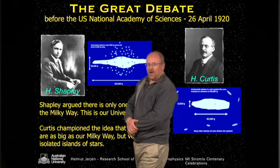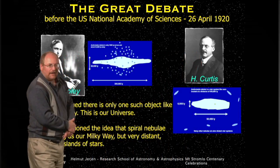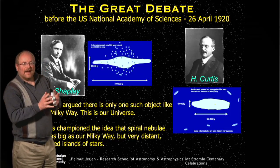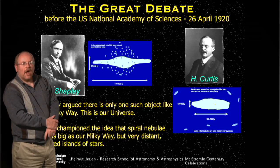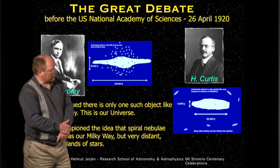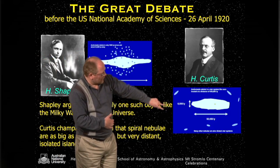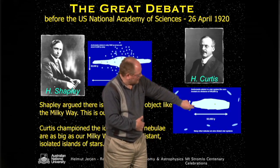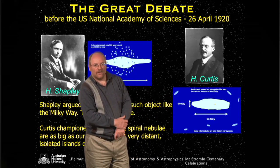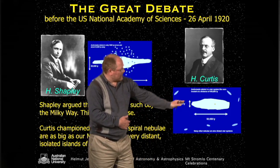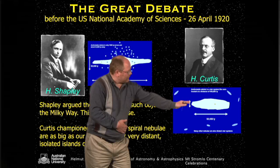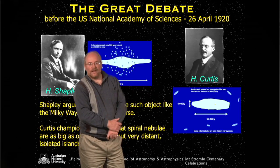On the other hand, Curtis championed the idea that the spiral nebulae are in fact island universes, as big as our own Milky Way, but very, very distant — and therefore you cannot see them in detail. In this model, the Milky Way is about 50,000 light years across and about 6,000 light years thick, and there is a long, long distance out to the next island universe.